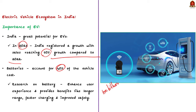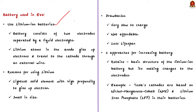In this context, it is very important to work on the batteries of electric vehicles, as they account for 40% of the vehicle cost. Research on batteries can enhance user experience and provide benefits like longer range, faster charging, and improved safety. Almost all electric vehicles use lithium-ion batteries. The battery consists of two electrodes — an anode and a cathode — separated by a liquid electrolyte. Lithium atoms in the anode give up electrons that travel to the cathode through an external wire, providing the current that powers the motor.